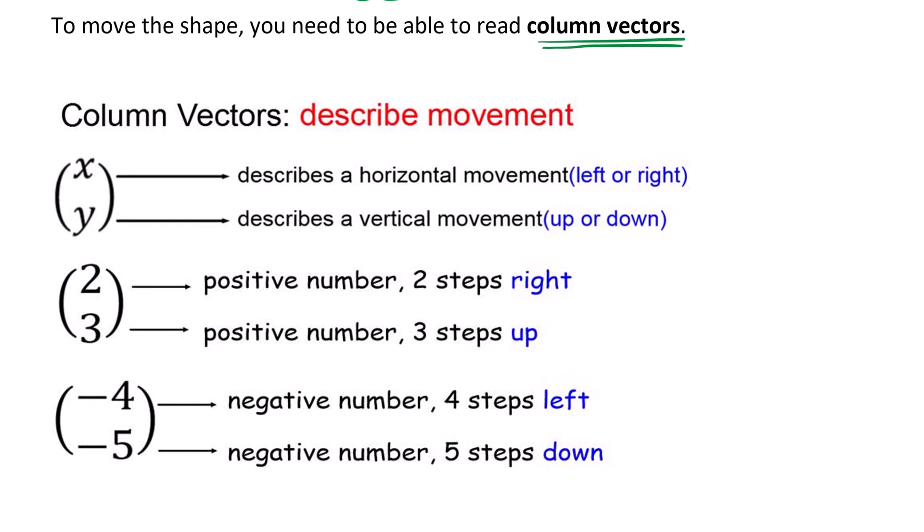They are written in brackets. The first number, the number on top, represents x. You are thinking of a grid. So x is a horizontal line, so it describes a movement left or right.